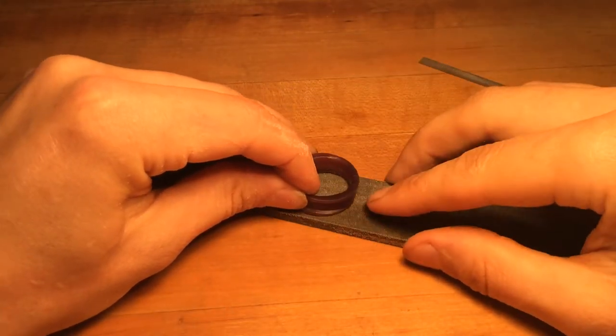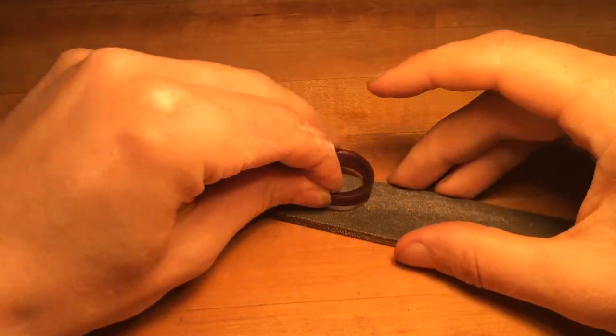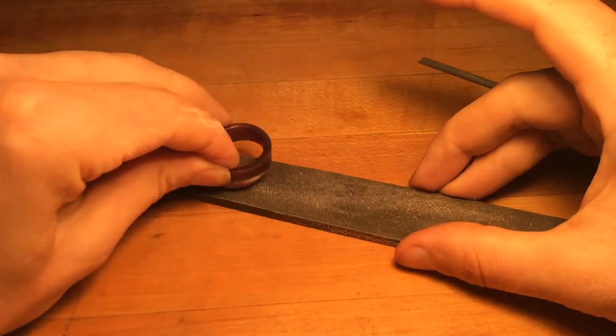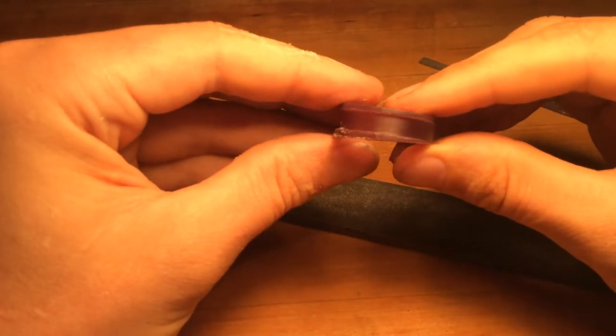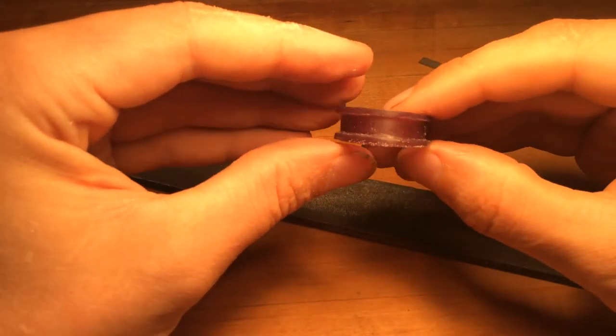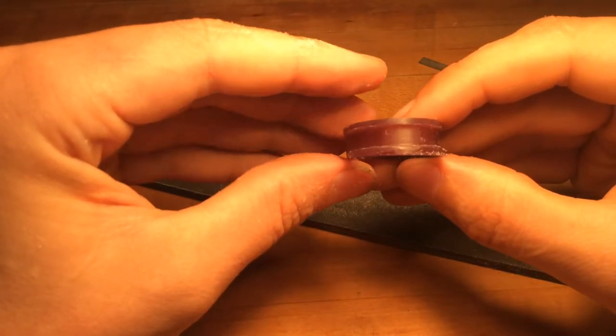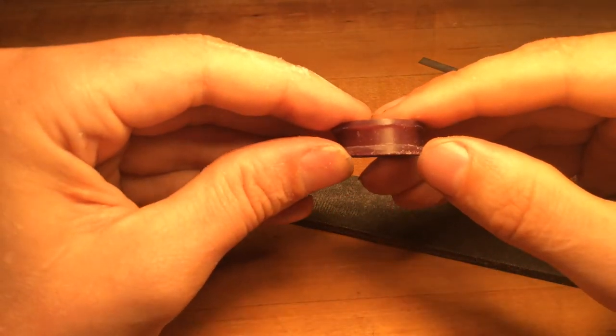Remember, once your wax gets this thin, it needs to be supported. We're just trying to get that extra thickness off so we have something closer to the right thickness. This is too thin, and this region is too thick, just between here and here. Along this edge it's okay, and along this edge it's okay.